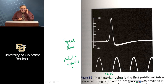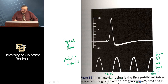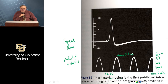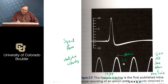A student asks about the periodic signal at the bottom of the recording. The instructor explains it's a sine wave — approximately 600 Hz — which gave a time calibration, so each cycle was about 1.5 milliseconds.